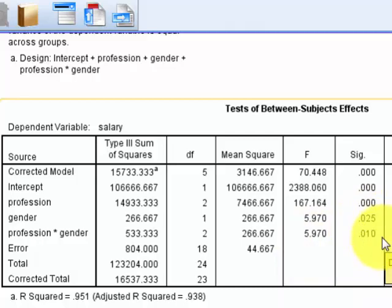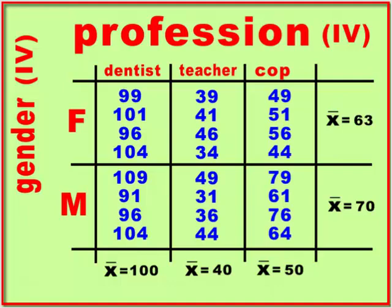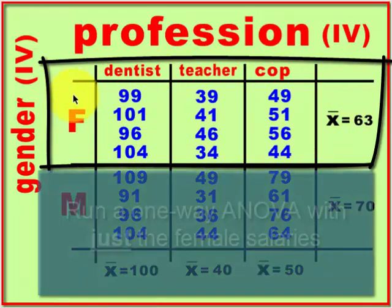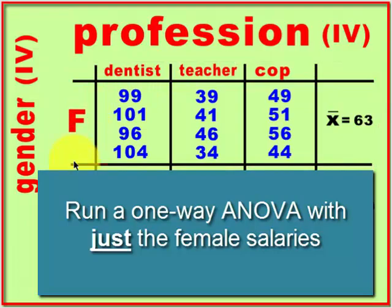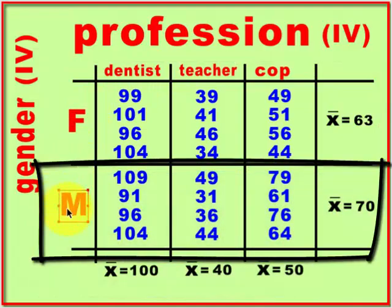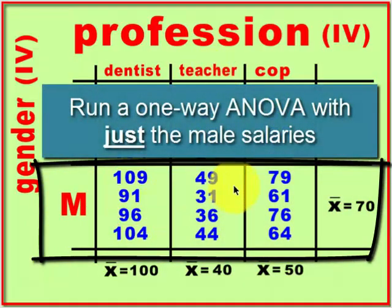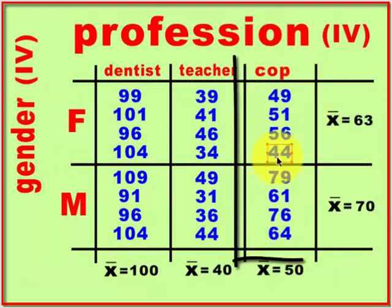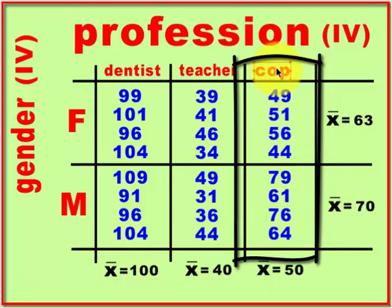If you have a significant interaction, you would look at what we call simple effects. A simple effect is looking at strictly one level of one IV across all the different levels of a different IV. For example, a simple effect would be looking at the female scores, or comparing male dentist, male teacher, and male cop scores. That's a simple effect.